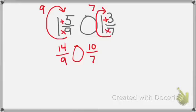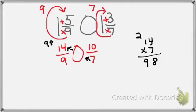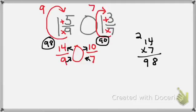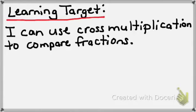We cross-multiply from bottom to top — so we have 7 times 14. We write the answer above it and circle it. Then bottom to top again on the diagonal: 9 times 10 equals 90. We write it down and circle it. Then we're simply comparing our whole numbers. In this example, 98 was greater than 90. Therefore, 14-9ths is greater than 10-7ths, which means that 1 and 5-9ths is greater than 1 and 3-7ths. Hopefully by now you can confidently say: I can use cross-multiplication to compare fractions. As always, we will practice in class. If you need any help, please see a teacher. Good luck with this lesson.